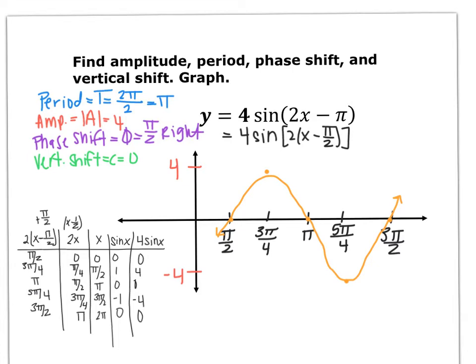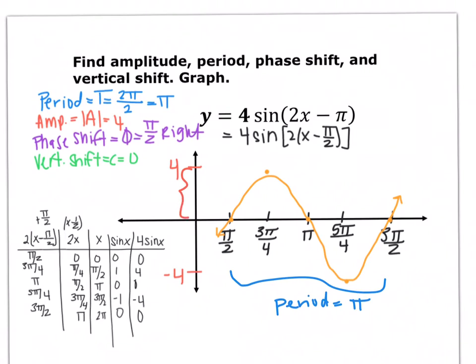We have our period going from π over 2 to 3π over 2 — a length of π in the x direction. Our amplitude is represented in the height of a bump, which is 4. Our phase shift is represented by the fact that instead of starting at (0, 0), it shifted over and is now starting at (π over 2, 0). There is no vertical shift, so the middle points are still at y equals 0.